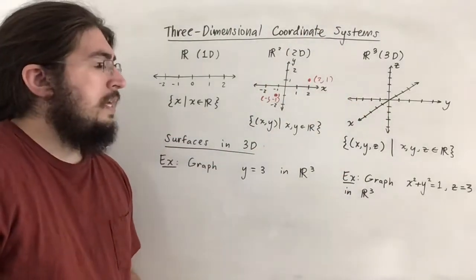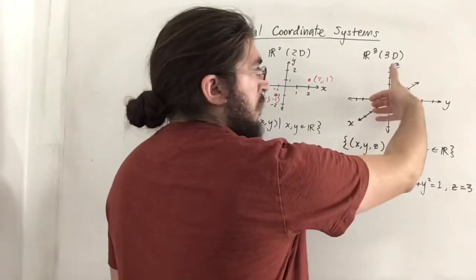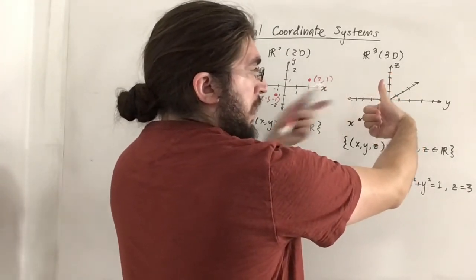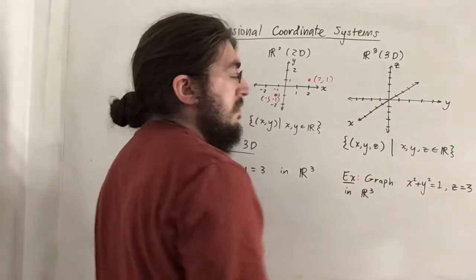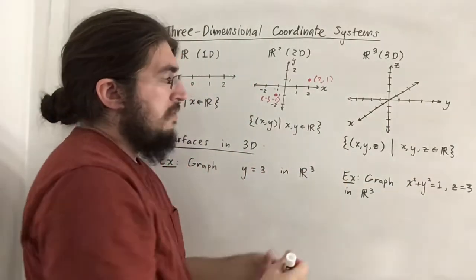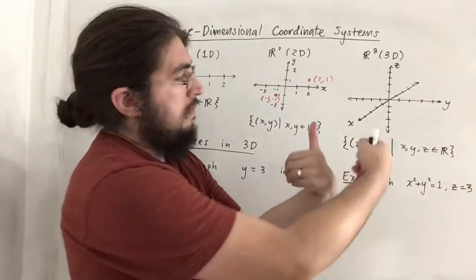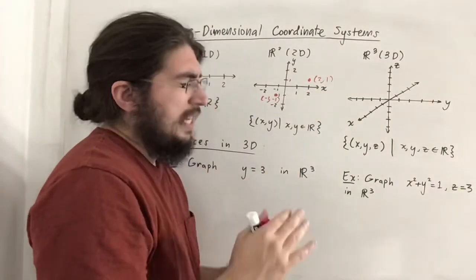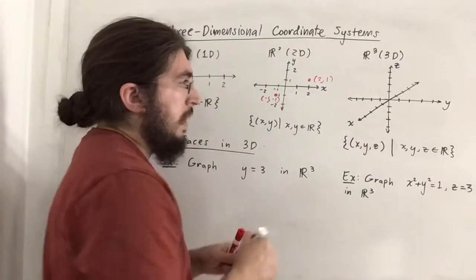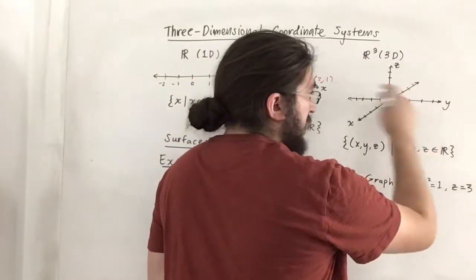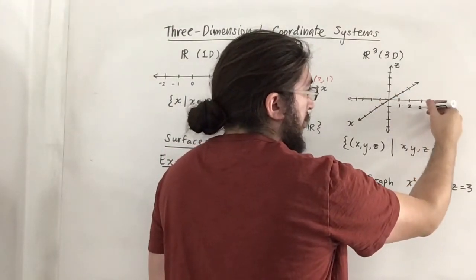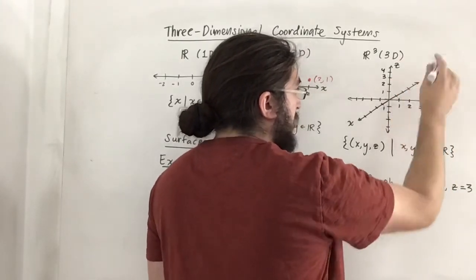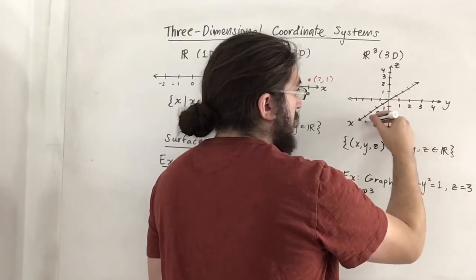The right-hand rule really just reminds us of how things are oriented in a positive direction — what's pointing up is positive, what's pointing here is positive, what's pointing there is positive. If you use the left-hand rule things would be different — some axes would not be positive. So that's the convention we're going to go by. I'll just label the positive ones for y, z, and x; the negative ones are on the other side.